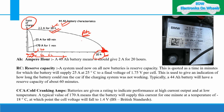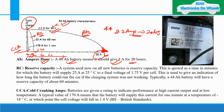The second graph is for RC — reserve capacity — not for AH. The third graph is for CCA. To recap AH: a 40 AH battery should give 2 amps for 20 hours; a 44 AH battery should give 2.2 amperes of current for 20 hours. That is the definition of ampere hours. Now coming to RC.